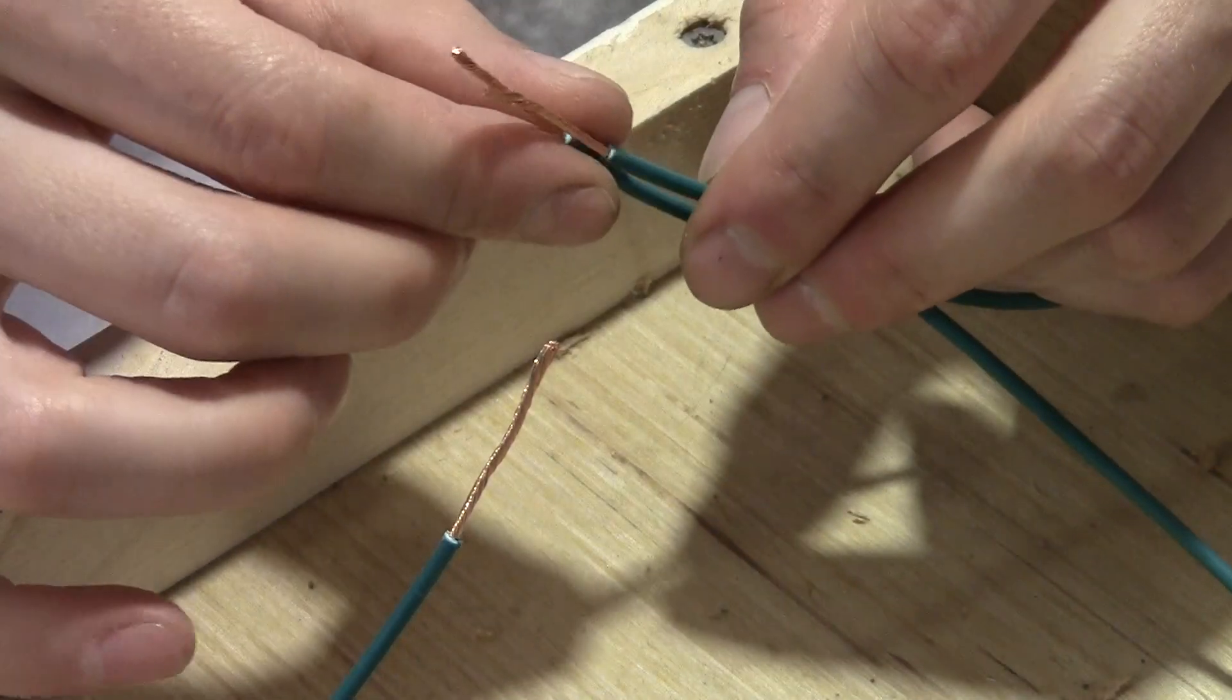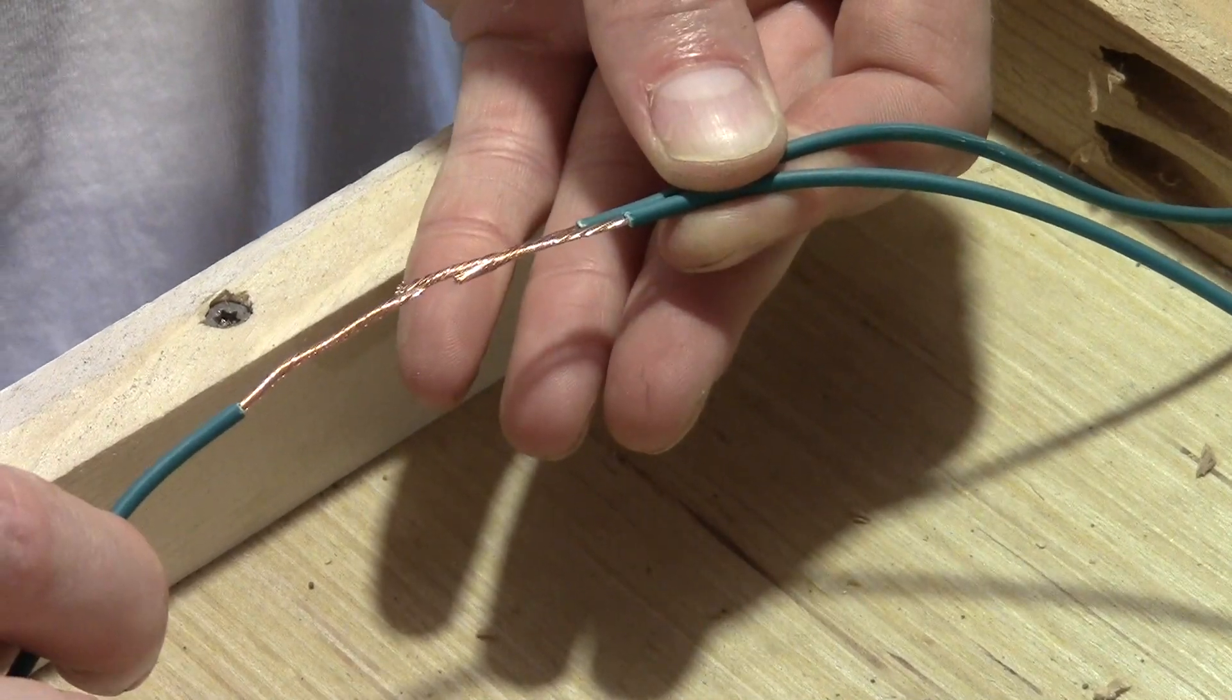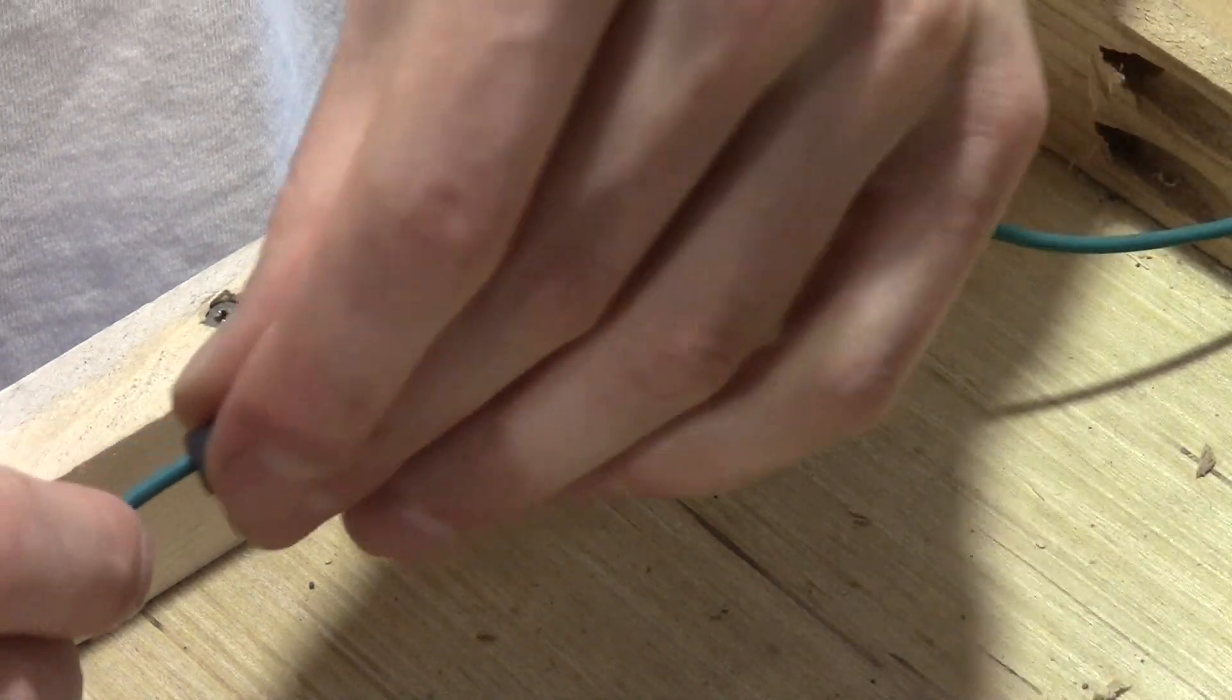So these two wires are going to be twisted together like this, and this wire is going to be like this, and they're going to get connected. You want to put the shrink tubing on the single side.